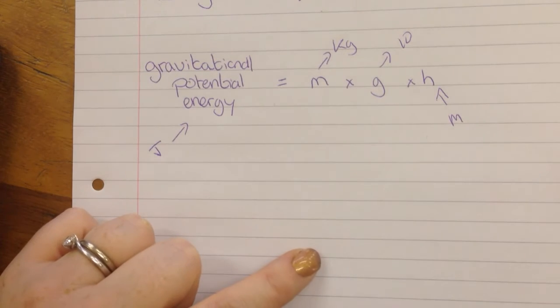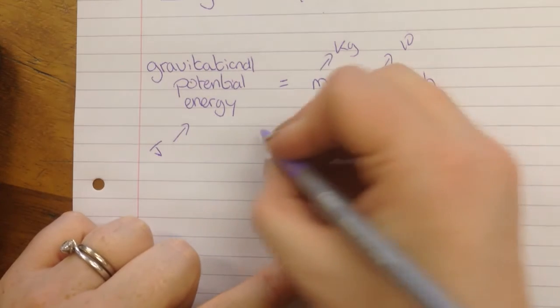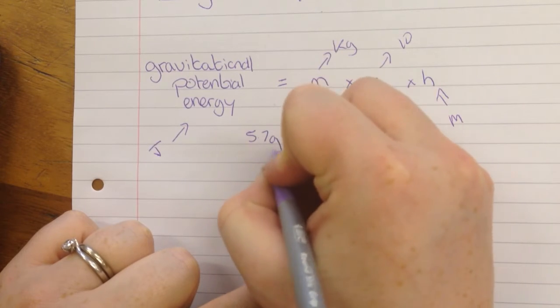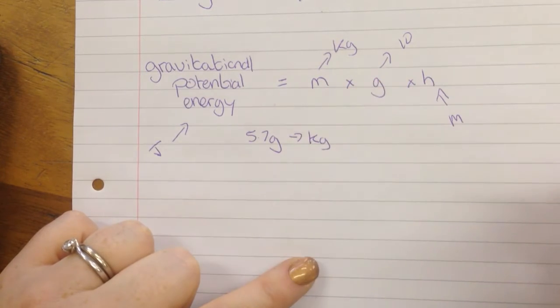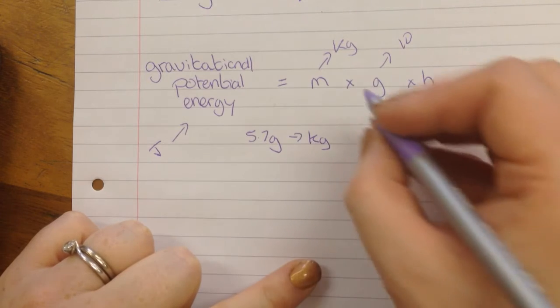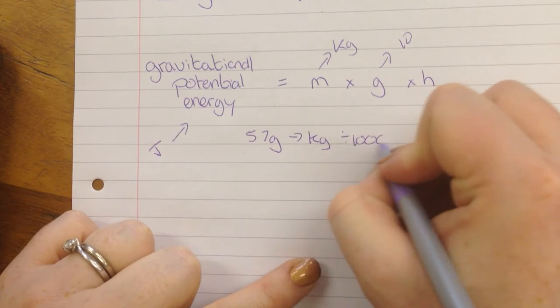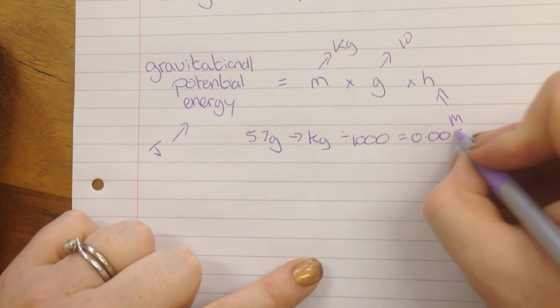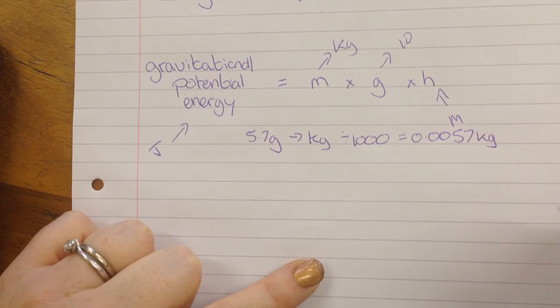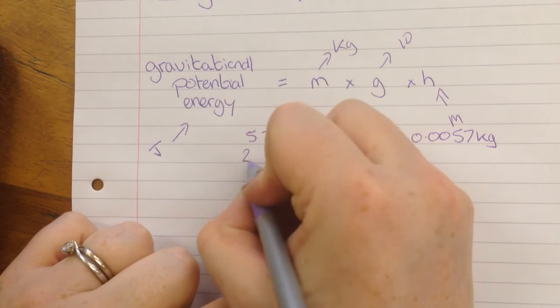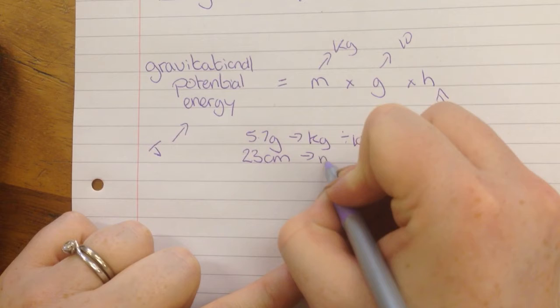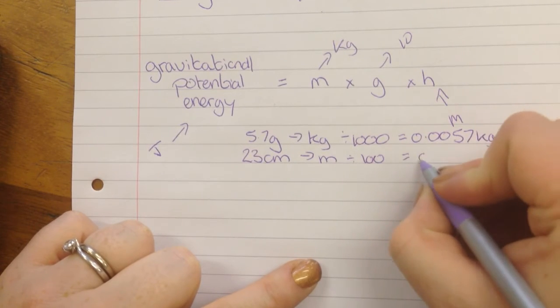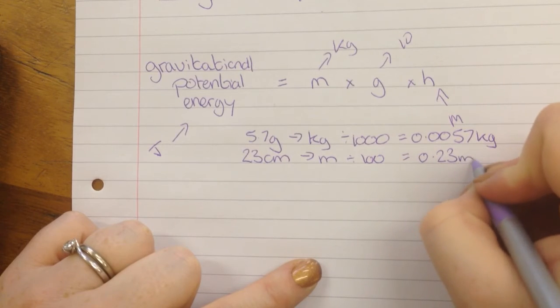So we need to do a little bit of pre-maths because the mass of the penguins is 5.7 grams. So we need to convert that into kilograms. To convert grams into kilograms we divide it by 1000. Which means the mass is 0.0057 kilograms. The height of the steps was 23 centimetres. We need to convert that into metres. So we divide by 100. So that equals 0.23 metres.